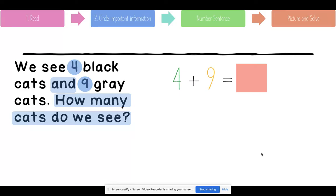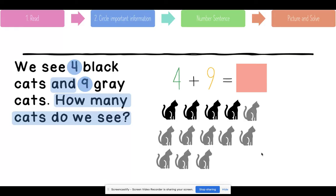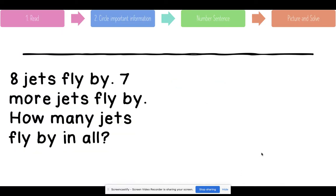Now that you have your number sentence, draw your picture. We started with four black cats and then nine gray cats. So what was your total of cats? Did you say 13? Very good. Let's go to the next one.